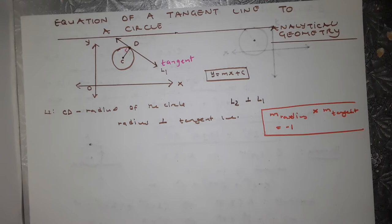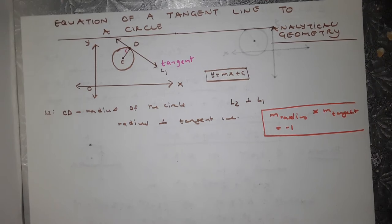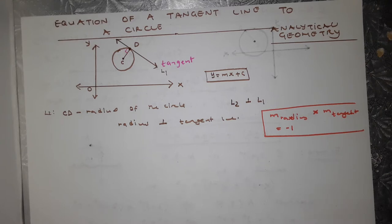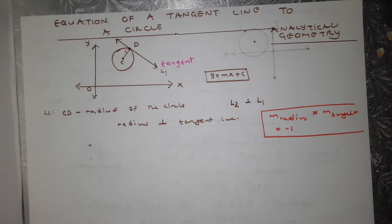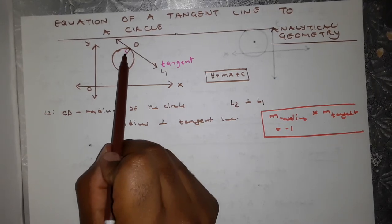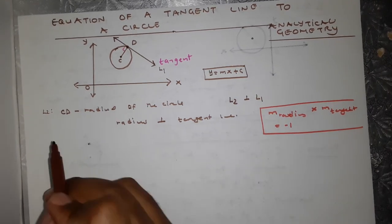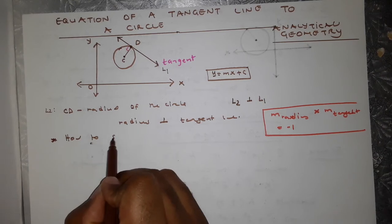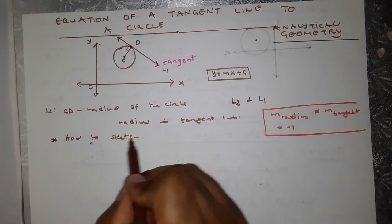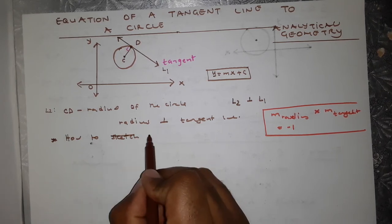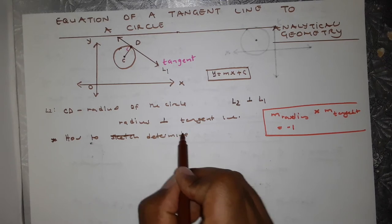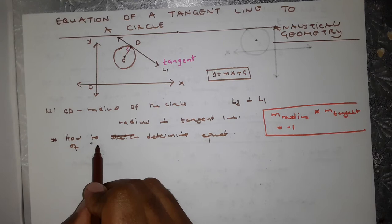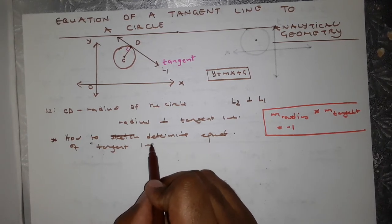This is very important to remember. If two lines are perpendicular, the product of their gradients equals negative 1. That means the gradient of the radius multiplied by the gradient of the tangent line equals negative 1. Since these lines are perpendicular, this angle right here is 90 degrees. Now, how do we determine the equation of the tangent line?